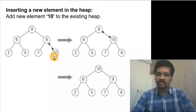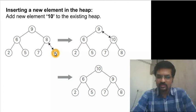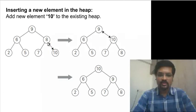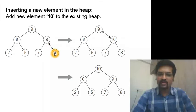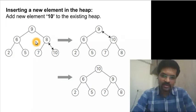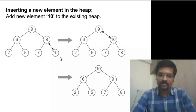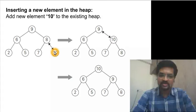We want to insert a new key with value 10. We insert that element into the seventh location of the array, which automatically makes it the right child of node 8. It already satisfies the shape property. Now the only concern is whether it satisfies the heap property — check the new node against its parent.